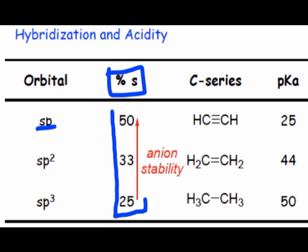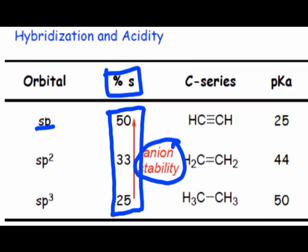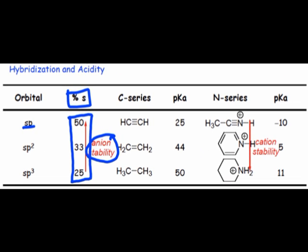We should also note that as the percentage of s goes up, both anion and lone pair stability also go up. On the other hand, the stability of the corresponding conjugate acids decreases as the amount of s-character increases.